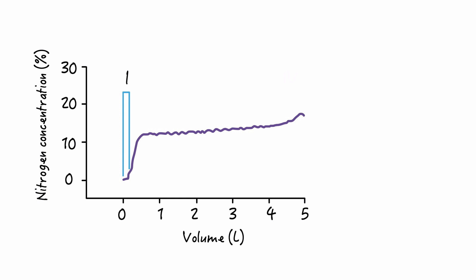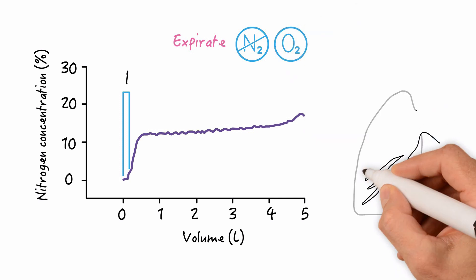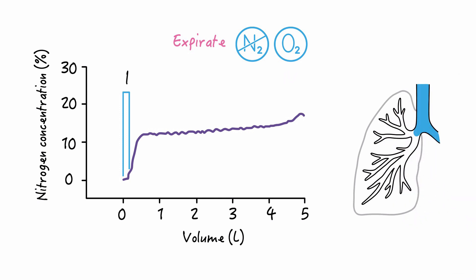Phase 1 represents the initial portion of the expirate, which is devoid of nitrogen since pure oxygen was inhaled during the previous breath. This portion represents gas residing in the proximal airways from the end of the prior inspiration.